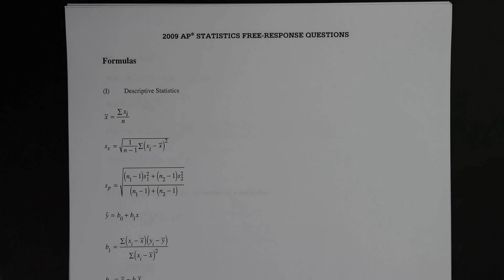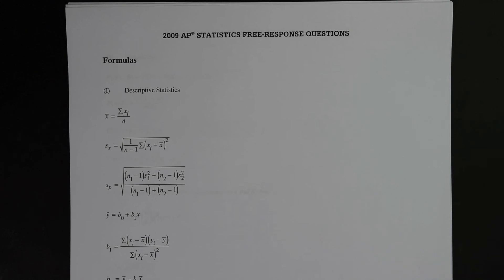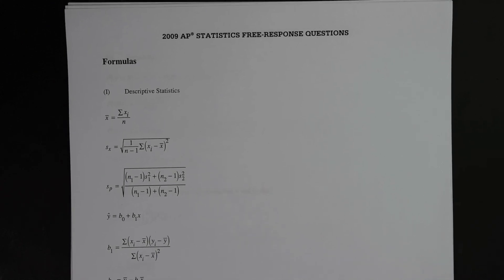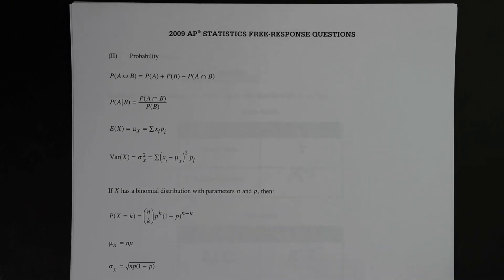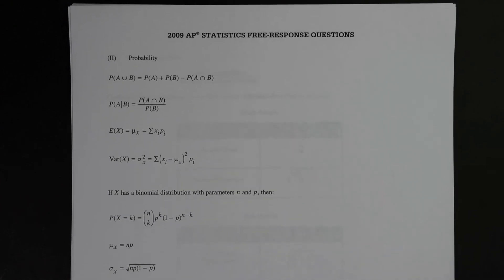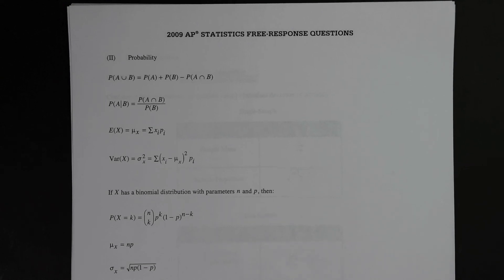In front of you is a printout of the 2009 AP statistics free response questions formula sheet, which is provided to you on the exam. The first page is not very important towards this concept. It's just for you to be aware that this is readily available to you. The second page is also not very important, but duly note that there are useful things such as binomial distribution concepts that I plan to cover in the future through these videos.